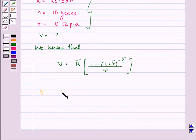So this implies V is equal to 1200 bracket 1 minus 1 plus R, that will be 1.12, raised to the power minus 10, that is n, upon 0.12. Let us solve it.